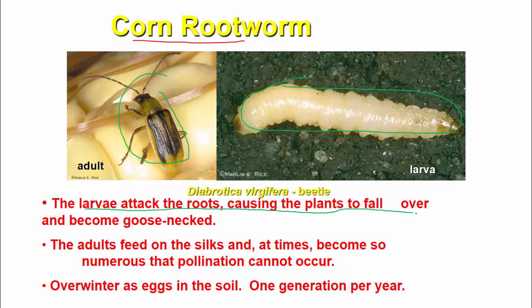This affects the root, which causes the plant to drop. The adults feed on the silk, and at times become so numerous that pollination cannot occur. The silk — the hair-like structure — is damaged. If the silk is destroyed, pollination will not occur, so the corn will not be properly pollinated.